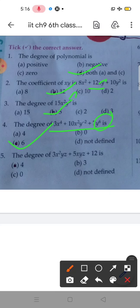Degree of this polynomial, highest power hai 2, y ki 1, z ki 1, so 2 plus 2 is 4. Option number A.